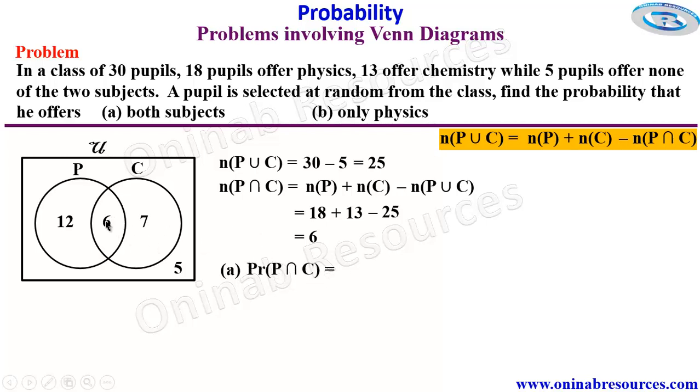Which is going to be the number of pupils offering both subjects over the total number of pupils in the class, giving us 6 over 30, to the simplest form we have it as 1 over 5. We then go ahead to B.